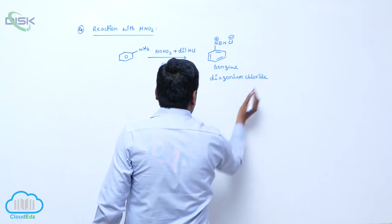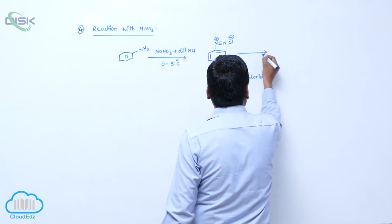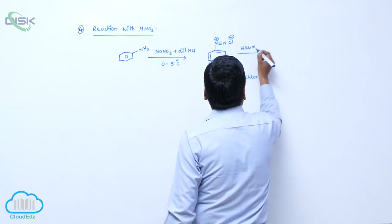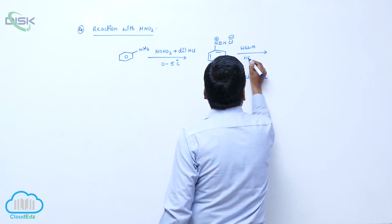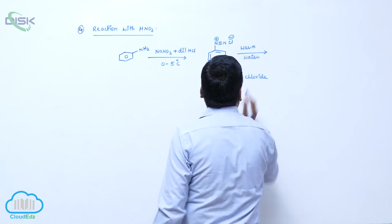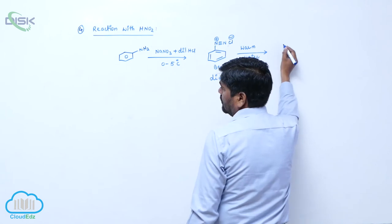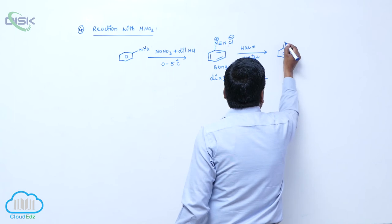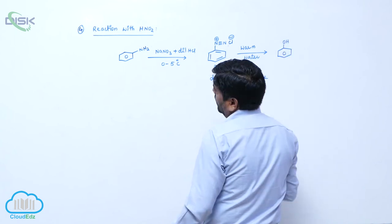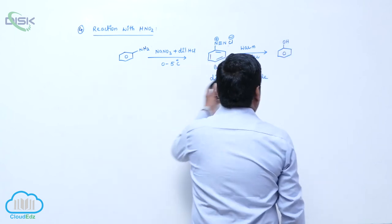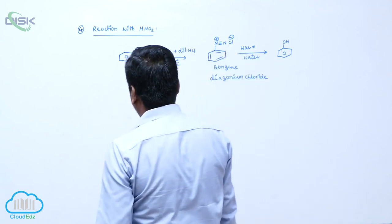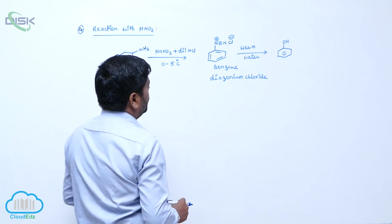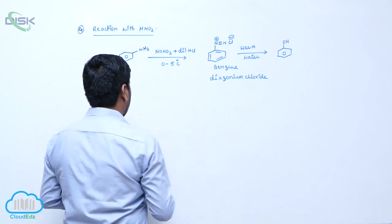Benzene diazonium chloride on hydrolysis with warm water converts into phenol. So an aromatic primary amine converts into phenol.